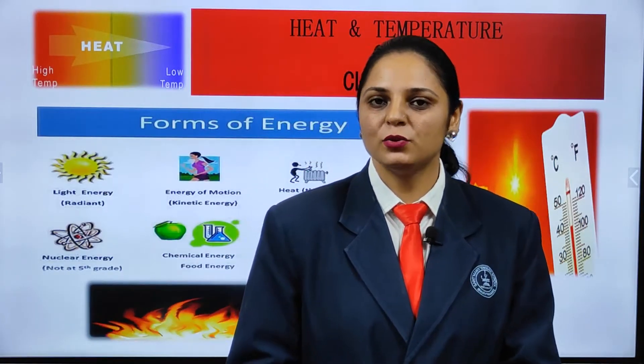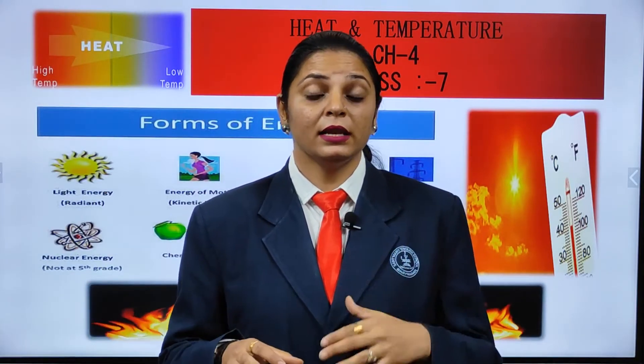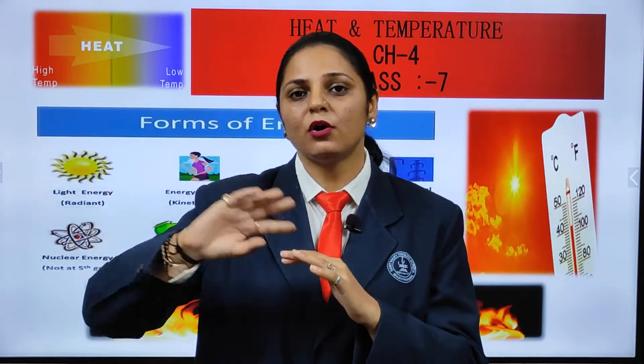Welcome students, this is Kavita Jangra here and today we are going to study chapter number four, that is heat. Before I go ahead, I want to correlate this chapter with chapter number three, fiber to fabric. I talked about plant sources and animal sources. Summer clothes are made of cotton from plant sources, which cools your body. Woolen clothes derived from animal sources entrap air, acting as an insulator, not allowing heat to pass through — that's why woolen clothes are best for winter.